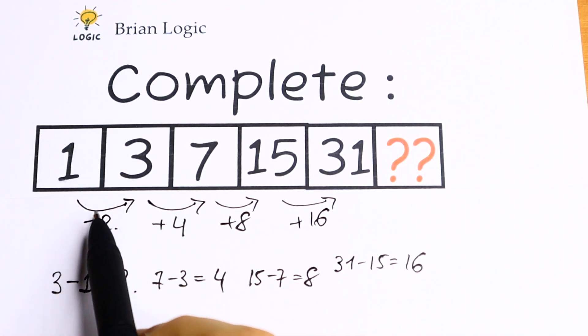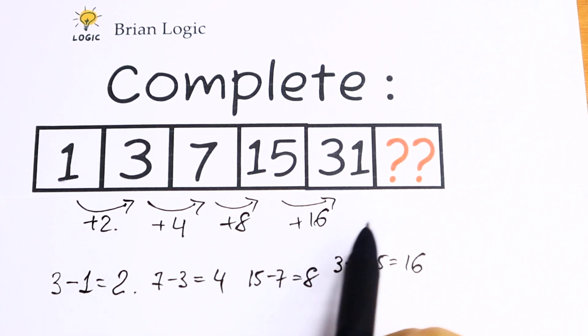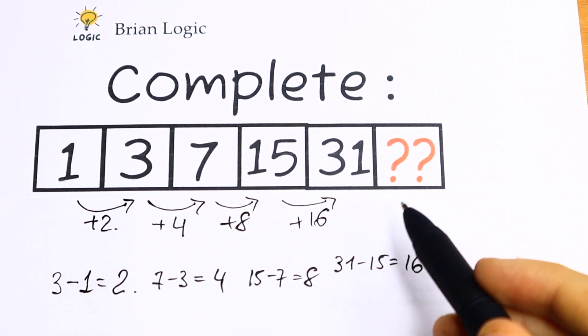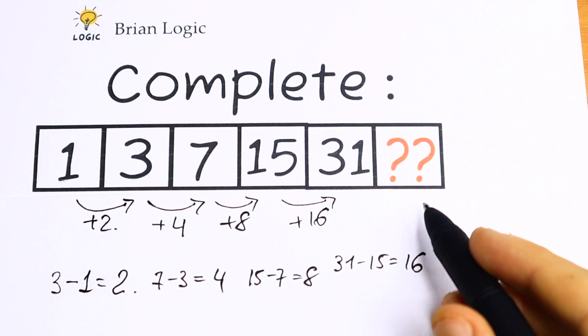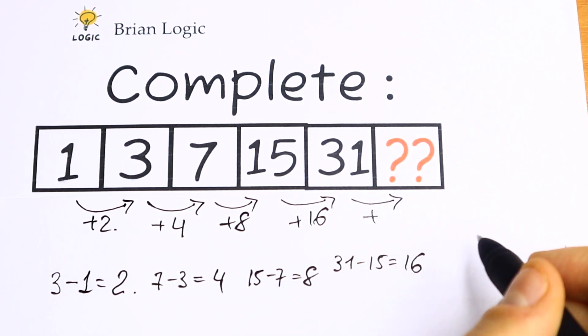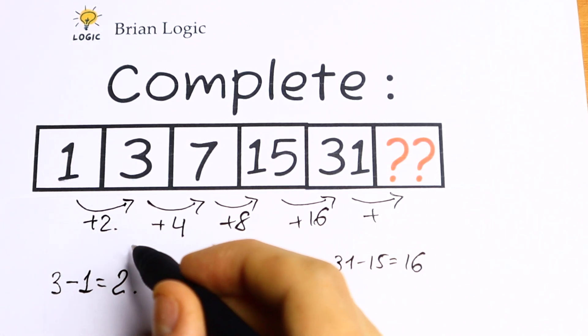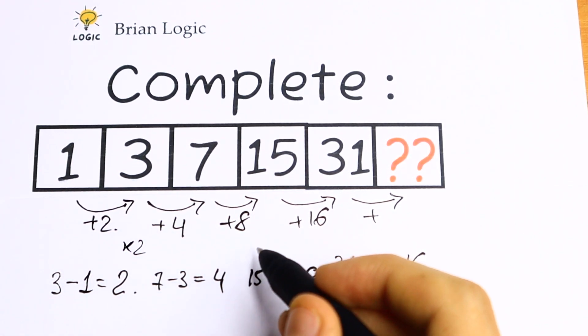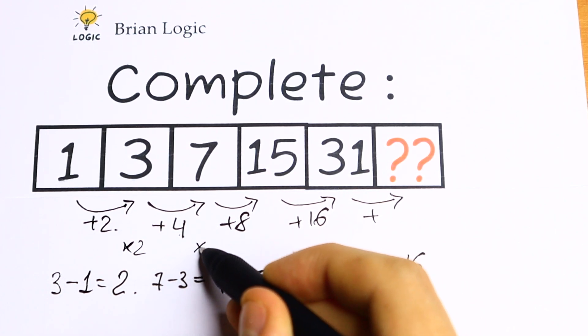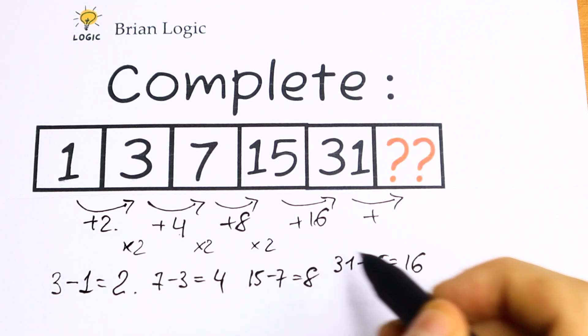Take a look. We need to add first plus 2, plus 4, plus 8, plus 16. But what is the pattern between all of these numbers? Right here we have 2, then 4. We multiply by 2. Then 4 multiplied by 2 gives 8. 8 multiplied by 2 gives 16.